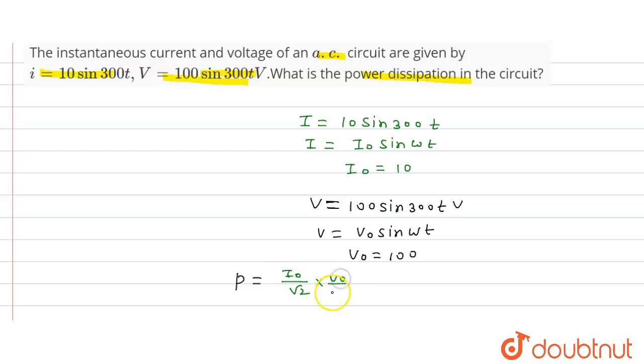This equals (10/√2) × (100/√2), which equals 1000/2, which equals 500 watts.